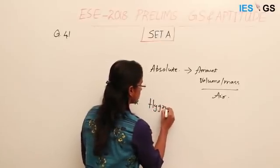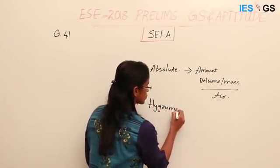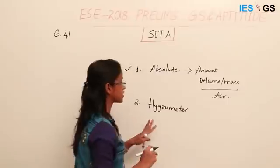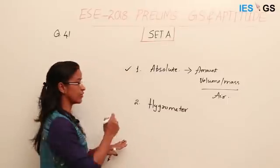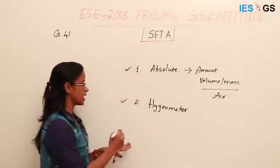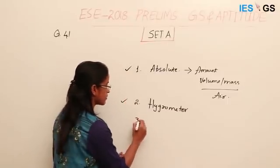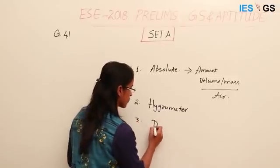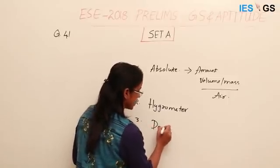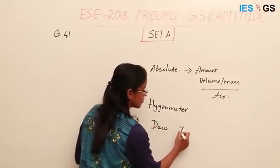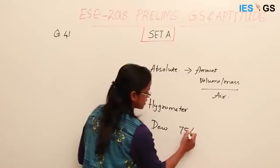The second statement tells that hygrometer is an instrument used to measure humidity, especially relative humidity. So the second statement is also correct.